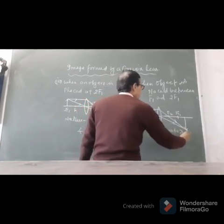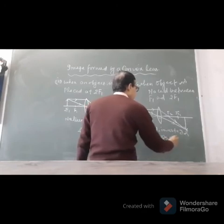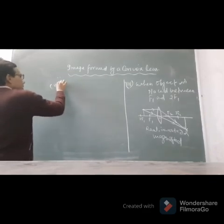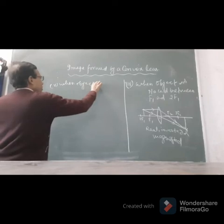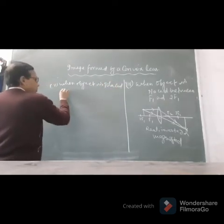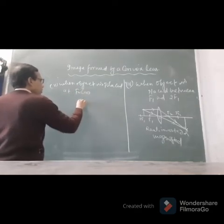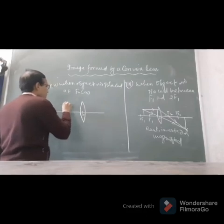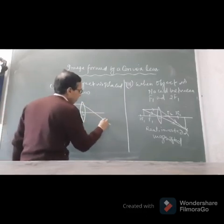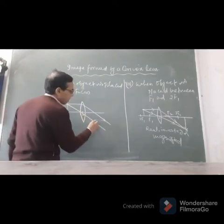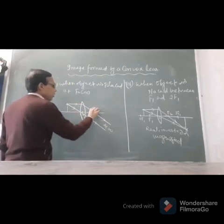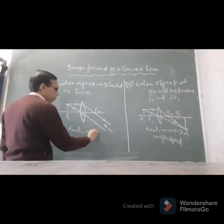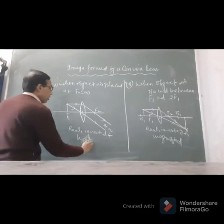The fifth position of the object is when the object is placed at the focus F1. The image is formed at infinity. The nature of the image is real, inverted, and highly magnified.